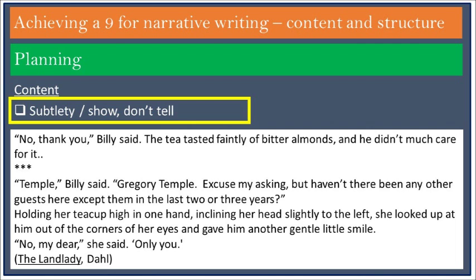Look at how Dahl ends the story: 'Temple,' Billy said. 'Gregory Temple. Excuse my asking, but haven't there been any other guests here except them in the last two or three years?' Holding her teacup high in one hand, inclining her head slightly to the left, she looked up at him out of the corners of her eyes and gave him another gentle little smile. 'No, my dear,' she said. 'Only you.' The implication behind 'only you' is terrifying. The only people who come to this hotel are young men who end up getting killed. But Dahl makes us work this out for ourselves, and as such the writing is far more understated, sinister, and effective.